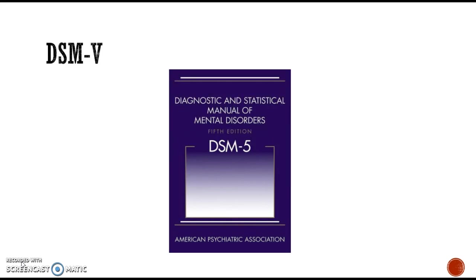The first thing I want to talk about is the DSM-5 — the fifth edition of the Diagnostic and Statistical Manual of Mental Disorders. This is published by the APA, the American Psychiatric Association. It's reliable because it looks at observable patterns of behavior and gives criteria for each disorder. They say behavior is disordered when it is the three Ds: deviant, distressful, and dysfunctional.